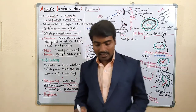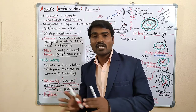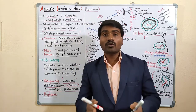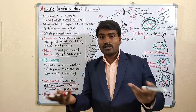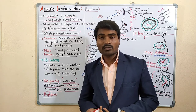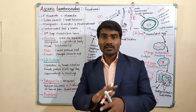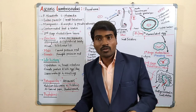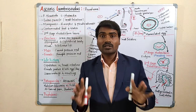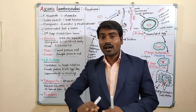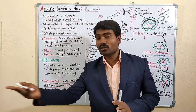Prophylaxis means prevention. For prevention: first, use boiled and filtered drinking water, as heat kills the worms. Second, wash your hands with soap and wash vegetables and fruits. Third, use septic tank toilets instead of open defecation, so there is no contamination of food through fecal matter.